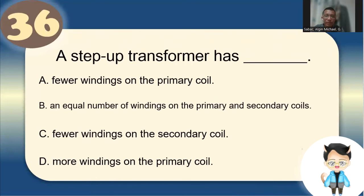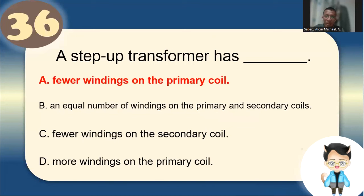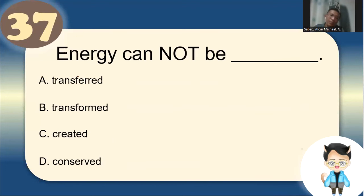Number 36: A step-up transformer has fewer windings on the primary coil because the voltage steps up. More windings on the primary means step-down. So step-up = fewer windings on primary coil.